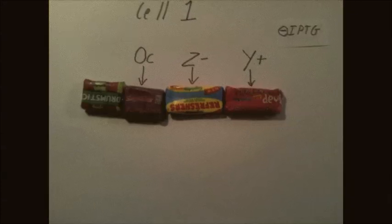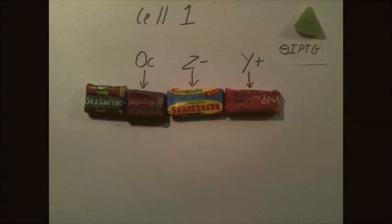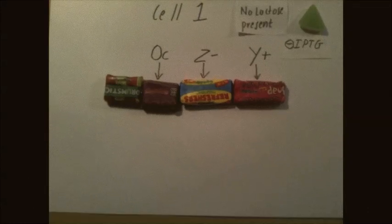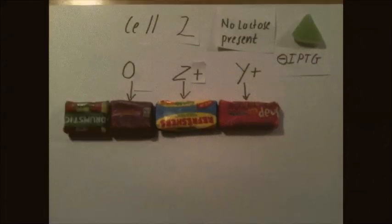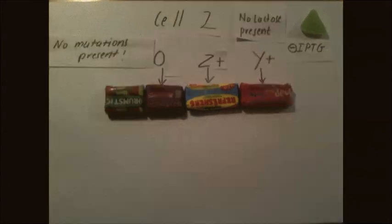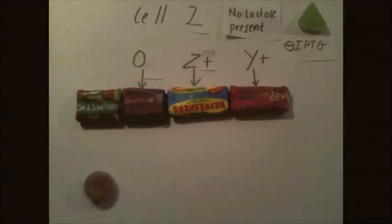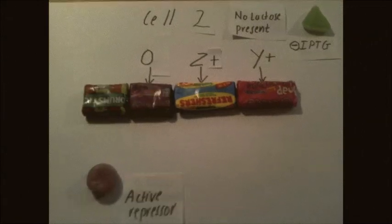There is no lactose present in Cell 1. In Cell 2 there are no mutations present and no lactose present, which means an active repressor is produced which can bind to the operator, as there is no mutation in the operator.